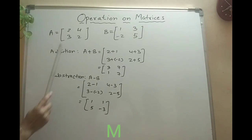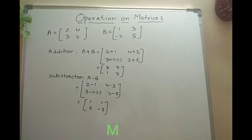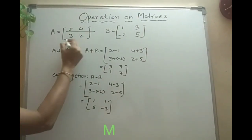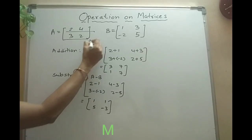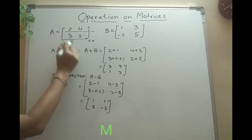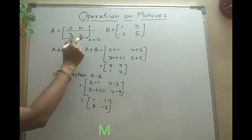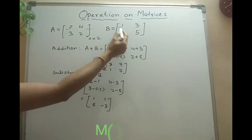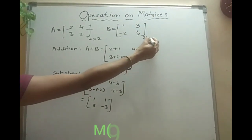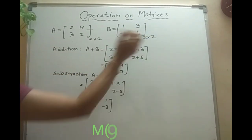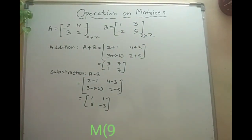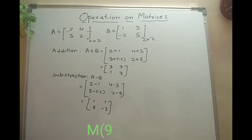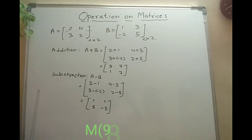The basic condition to add two matrices is that their order should be the same. Just to recall, what is the order of this matrix? Two rows — we always write rows first — and two columns. So the order of this matrix is two by two. Similarly, the other matrix also has two rows and two columns. Since the order of these two matrices is the same, we can add as well as subtract. If the matrices do not have the same order, we can't add and we can't subtract.